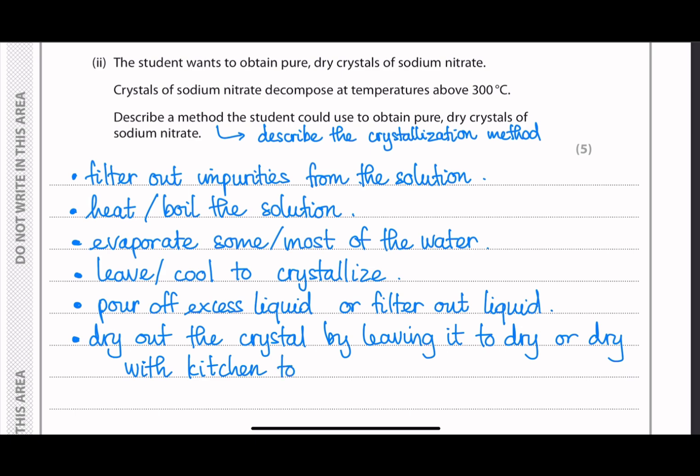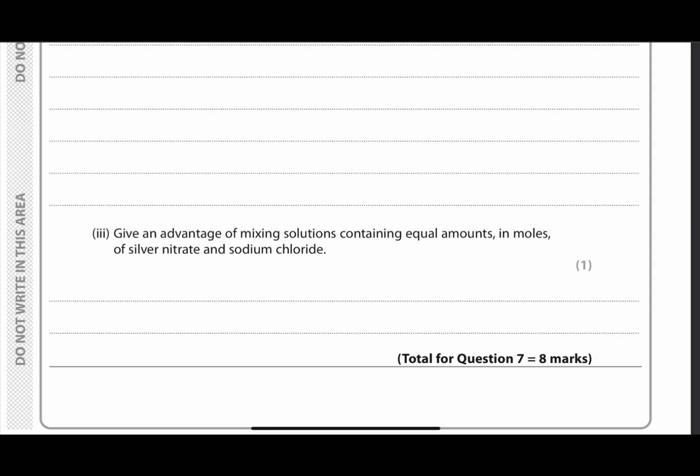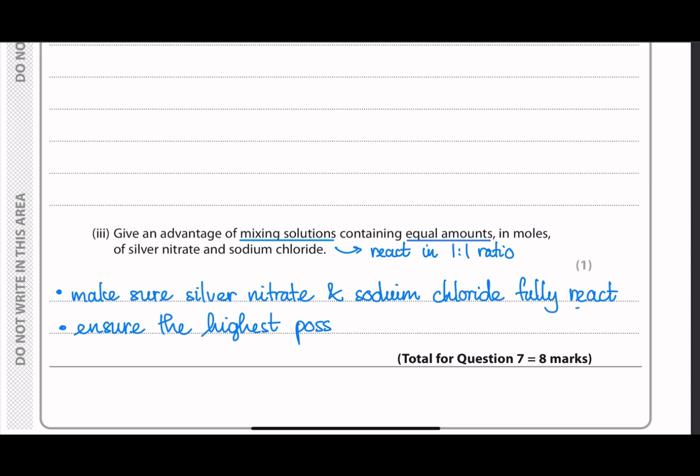We'll move on to the next question, which is the last sub-question of this question 7. So they asked to give an advantage of mixing solutions containing equal amounts in moles of silver nitrate and sodium chloride. So we immediately think about the ratio in moles between these two compounds because they react in the one-to-one ratio. They give you the equation two sub-questions above. So then they want to mix in equal amounts to make sure that both of these compounds fully react. And we also ensure that the highest possible yield happens because theoretical yield is different from the actual yield. And we also make sure that the products only contain silver chloride and there is no other excess reactant.